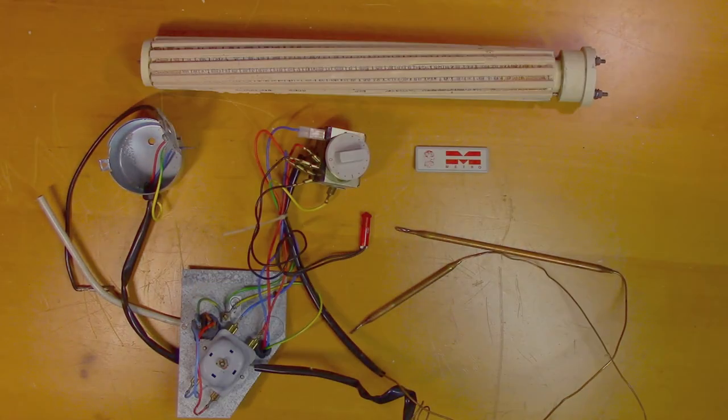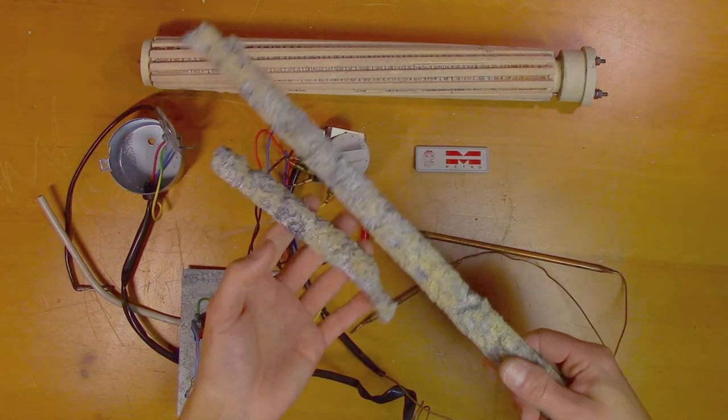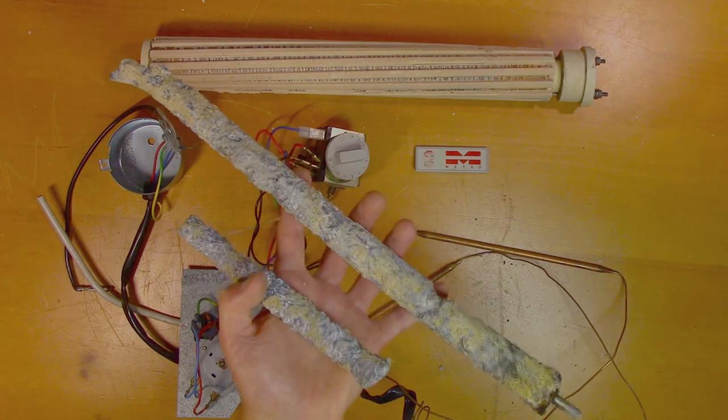So we have one more component that's not in the schematic. And that is the sacrificial rod. You can see this one has even fallen apart. So the point of this thing is to make sure that the water heater does not rust.